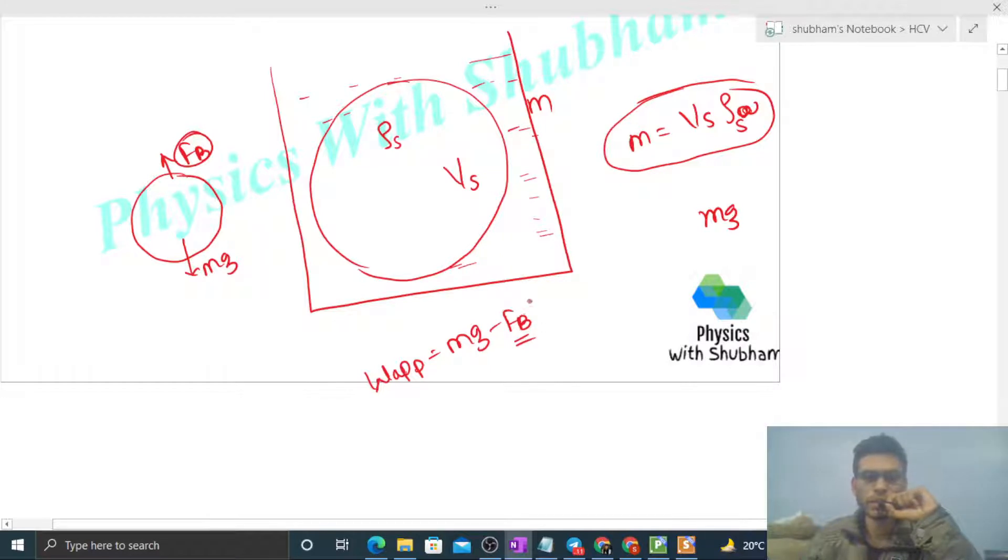Now what is this fb? The buoyant force when we completely immerse the solid in water will be volume of solid into density of water into g. That is the weight of displaced water. Volume of solid can be written as mass divided by density of solid.